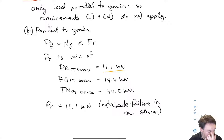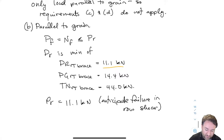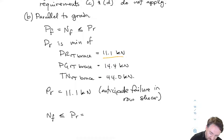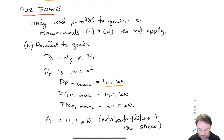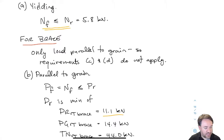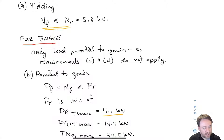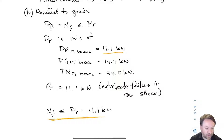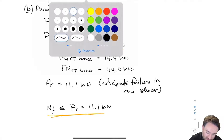We anticipate failure in row shear if we didn't have it in yielding. Therefore, nf has to be less than or equal to pr, which equals 11.1 kilonewtons. This is our second requirement on nf, and it is not as stringent as the yielding requirement. For yielding, nf had to be less than 5.8; for parallel-to-grain failure of the brace, it has to be less than 11.1. So our connection will not fail in the brace. Now we need to check the beam.